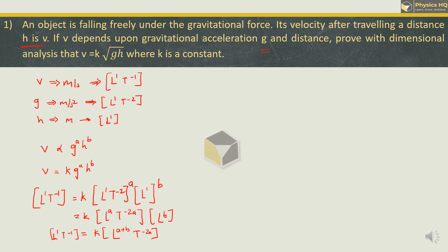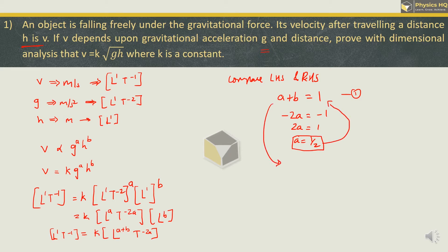Now let us compare things on the left-hand side and the right-hand side. Since k is constant it won't have any dimension. The dimensions on the left and right side should match. Comparing the powers of L, a + b should equal 1. From time, we get −2a = −1, so 2a = 1, giving a = ½. Now putting a = ½ back: ½ + b = 1, which means b = 1 − ½ = ½.